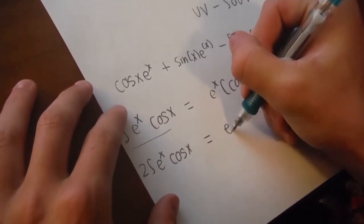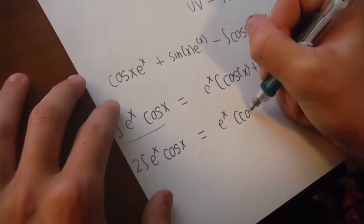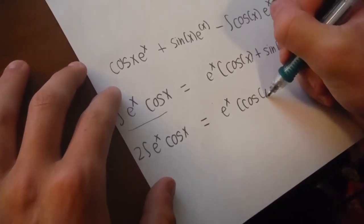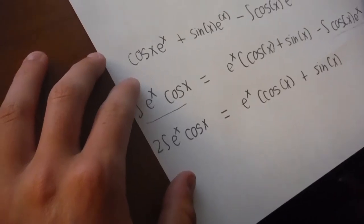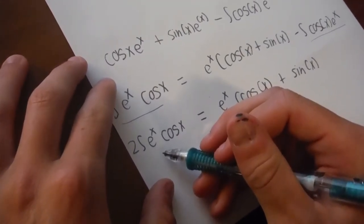So, e to the x cosine of x plus sine of x, and then, just to get back to the original equation, we just divide by two.